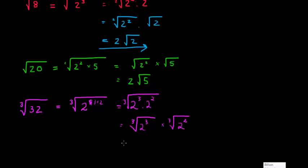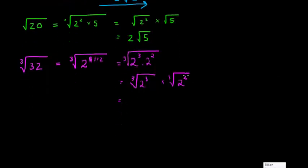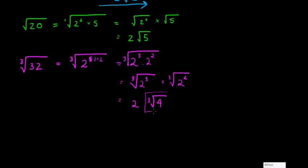The cube root of 2² can't simplify because the exponent 2 is not divisible by 3, so we keep it as the cube root of 4. For the cube root of 2³, using CERD law 1, 3 divided by 3 is 1, so that's just 2. Therefore, the cube root of 32 equals 2 times the cube root of 4. You can verify this with a calculator.